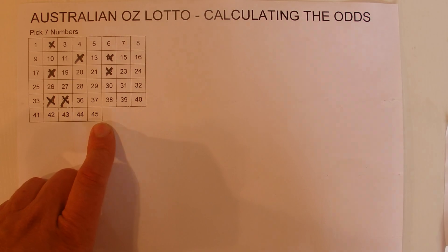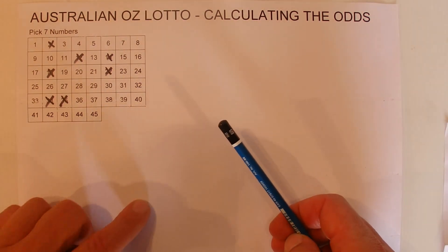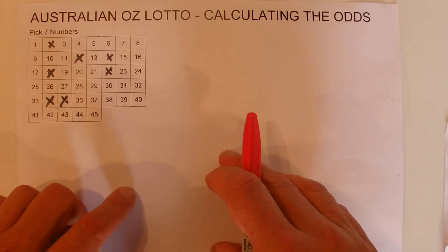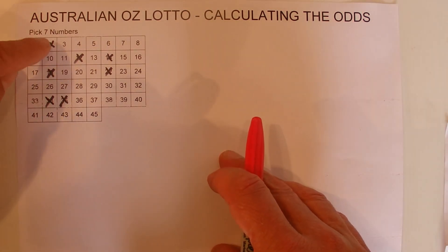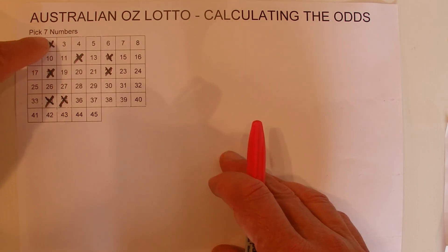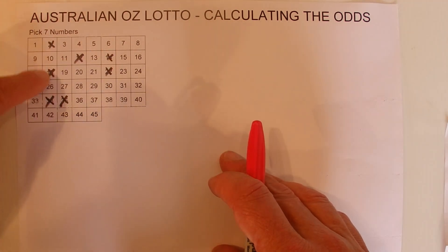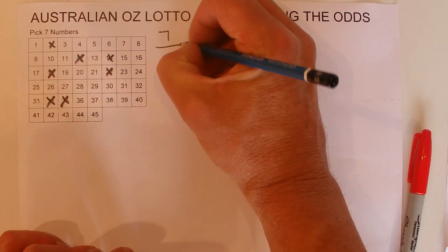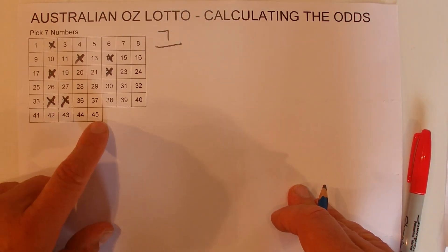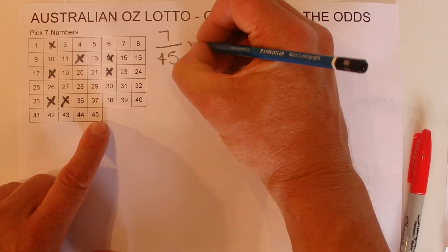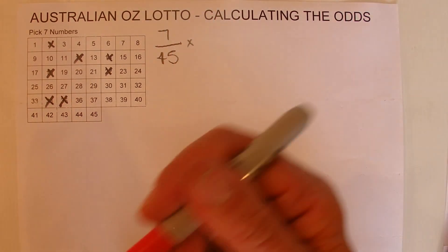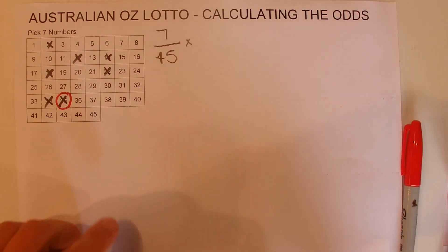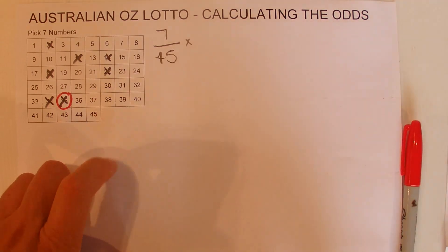This is your coupon, and as you're watching the draw, the first number that's drawn out of the barrel — you've got seven chances of matching that first number. So you've got one, two, three, four, five, six, seven chances, and that's out of 45 because there are 45 numbers to begin with in the barrel. I'll just circle one of those numbers to indicate that you have matched it.